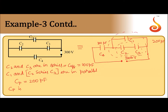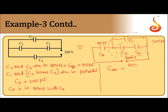Now Cp is in series with C4, therefore the equivalent capacitance equals 100 times 200 divided by 100 plus 200, which is equal to 200 by 3 picofarad. So this is the effective capacitance of the combination.